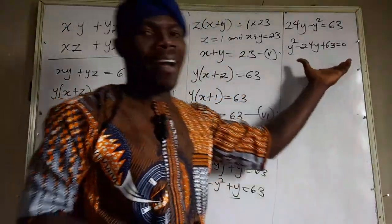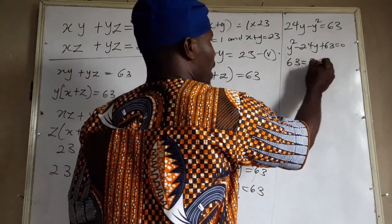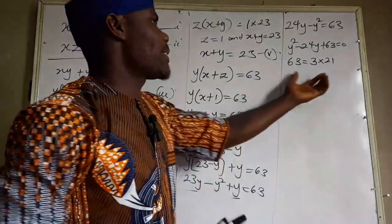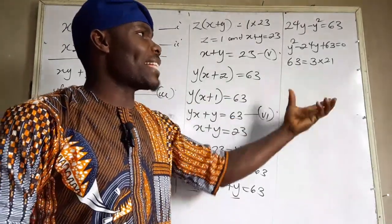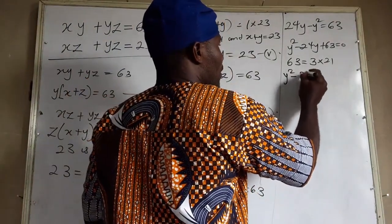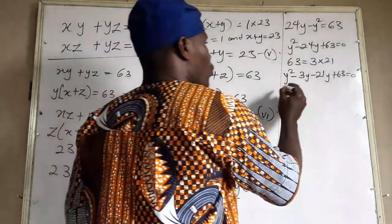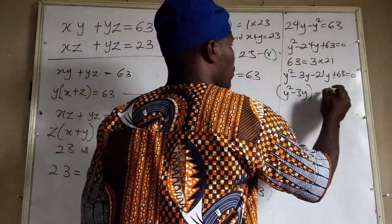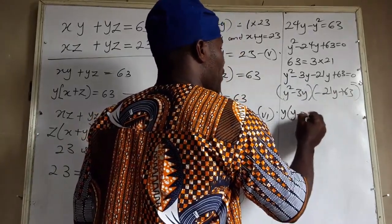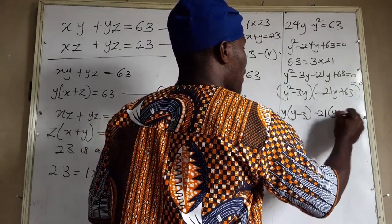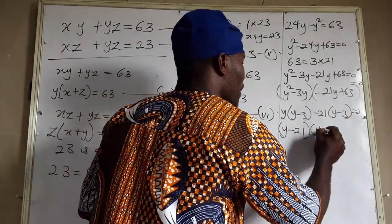Rearranging, we get y squared minus 24y plus 63 equals 0. Now let's find factors of 63. The factor of 63 can give us 3 times 21. So we split: y squared minus 3y minus 21y plus 63 equals 0. Grouping: y(y minus 3) minus 21(y minus 3) equals 0, giving us (y minus 21)(y minus 3) equals 0.